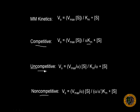However, uncompetitive inhibition affects Vmax as well as Km, and non-competitive inhibition affects both Vmax and Km. So let's look at these types of inhibition illustrated in the Lineweaver-Burk plot.